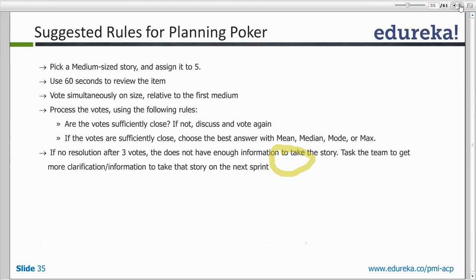The only catch is that even after three sets of voting, if the estimates come in like 3, 5, and 8, a mean or average value is taken and the estimate is considered as 5. You don't go beyond three sets of voting.